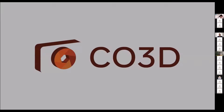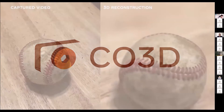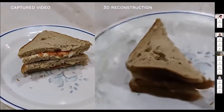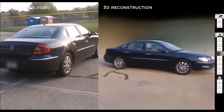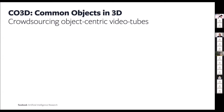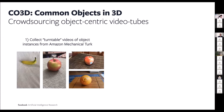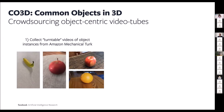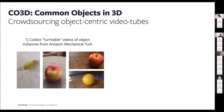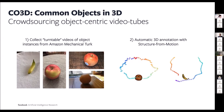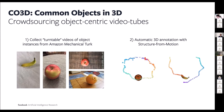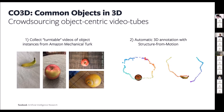Here is an overview of the dataset. It is composed of a lot of videos of individual instances of the object categories. Together with the videos, we released a bunch of 3D reconstructions which can be used to supervise your 3D reconstruction algorithms. The dataset is a crowdsourced collection of object-centric video tubes. We asked Amazon Mechanical Turkers to put an object in front of themselves on solid ground, take out their smartphone, and take a 360-degree video slowly rotating around the object to scan it from every single view. In a second stage, we automatically annotate the videos with a structure-from-motion algorithm that tracks the cameras and gives us a dense 3D reconstruction of the actual shape.